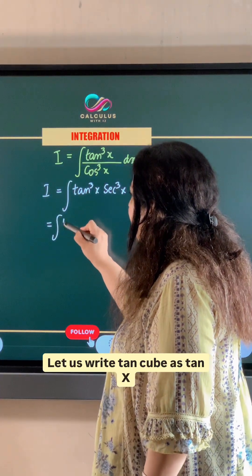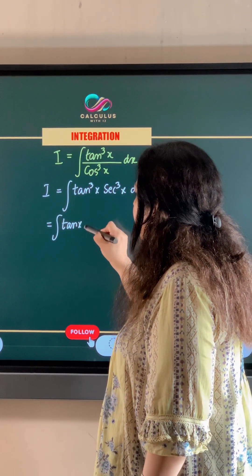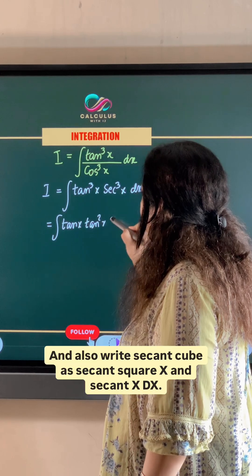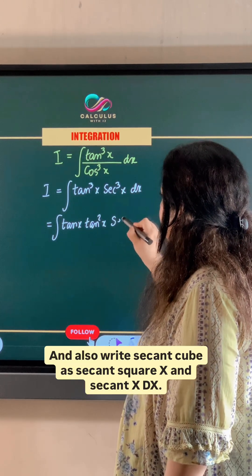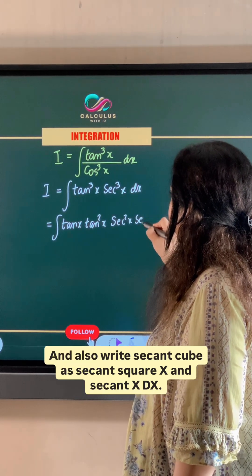Let us write tan cube as tan x, tan square x and also write secant cube as secant square x and secant x dx.